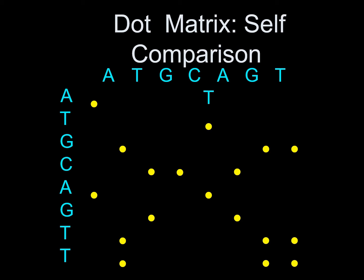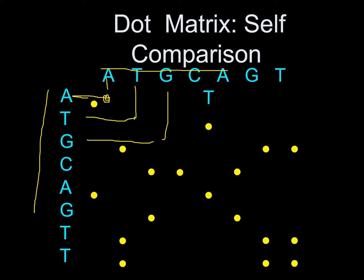As you can see, this is one sequence and this is another sequence. We place dots when the two sequences are the same at a point. For example: A and A are the same at this point, T and T are the same at this point, G and G are the same at this point, but P and G are not the same, A and G are not the same. C and C are the same, A and A are the same, and G and G are the same at this point.